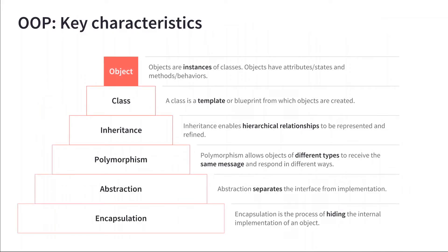What are the key characteristics of object-oriented programming? Looking at this pyramid, the basic principles of OOP start from the bottom up. The first principle is encapsulation, which means the data and internal behavior of an object is encapsulated — hidden from the external world. All the internal work is hidden, and the outside world only sees the data and behaviors you choose to expose.